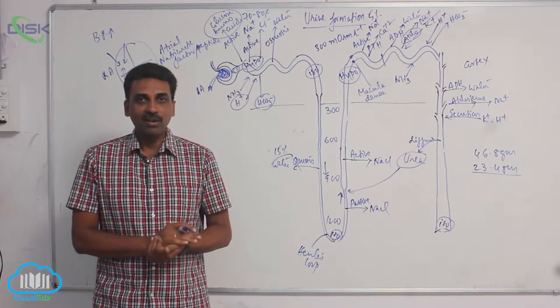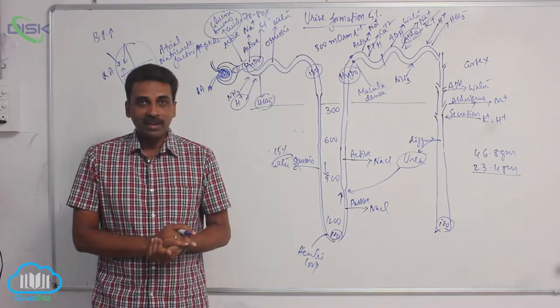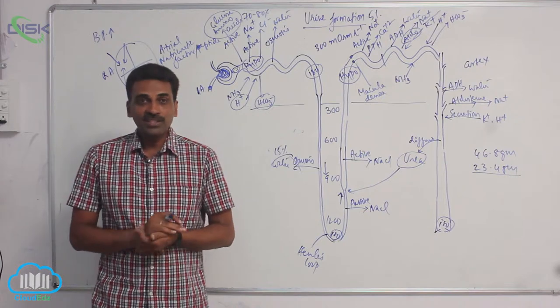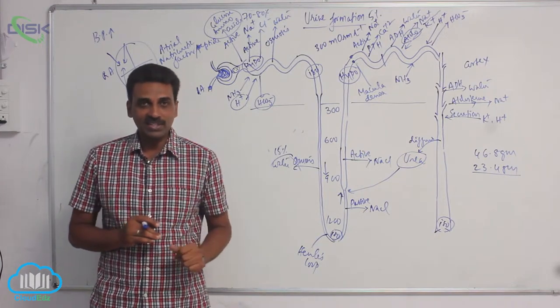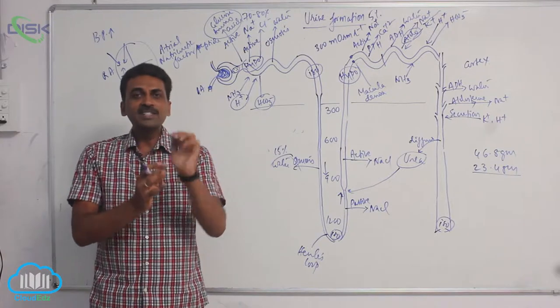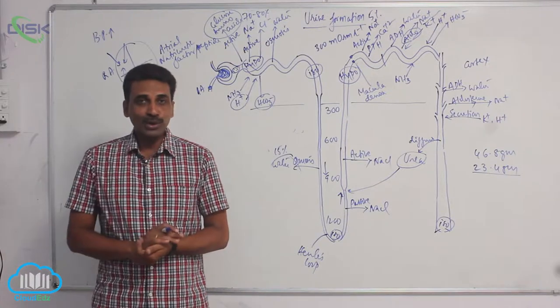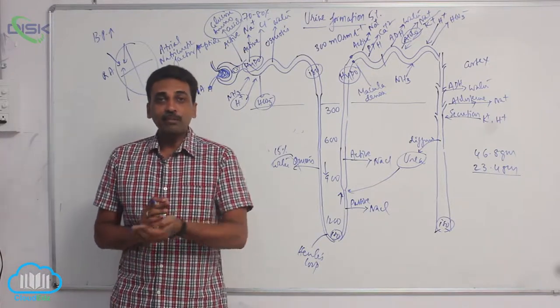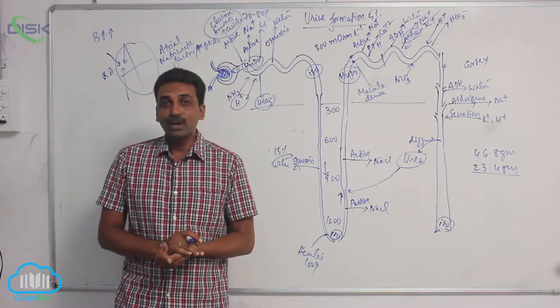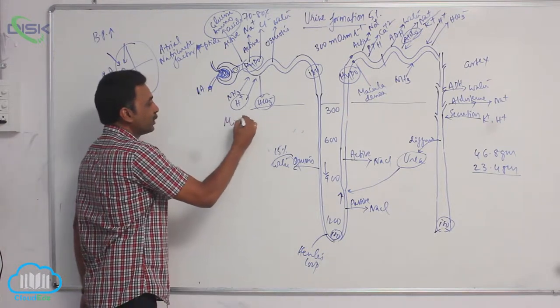You can see contraction of detrusor muscles and the internal urethral sphincter. The sphincters undergo relaxation. So, contents present in urinary bladder is pushed outside. The act of emptying of urinary bladder is called as micturition.